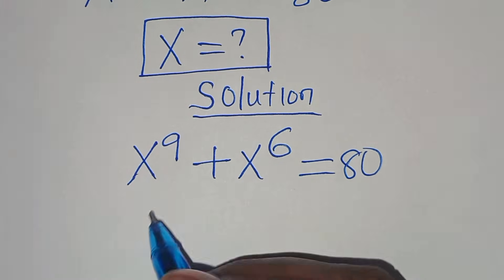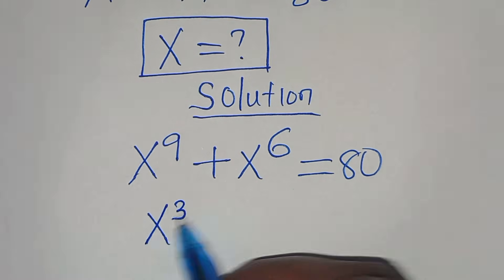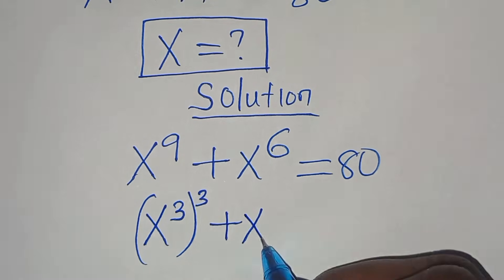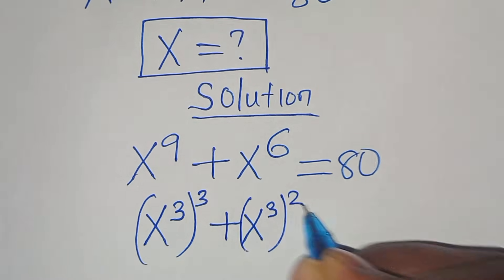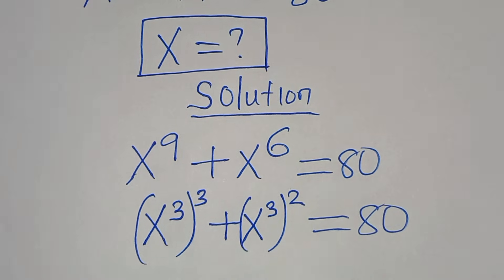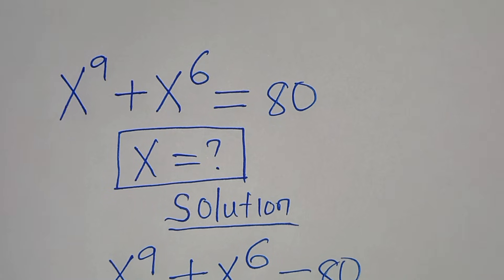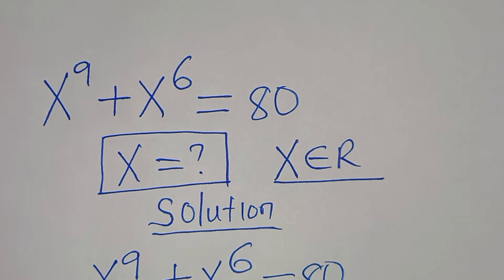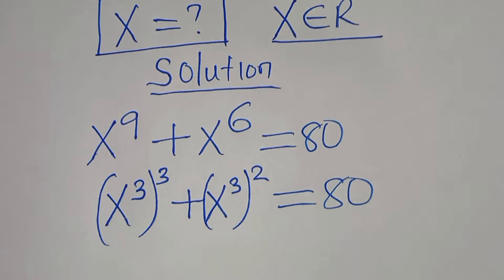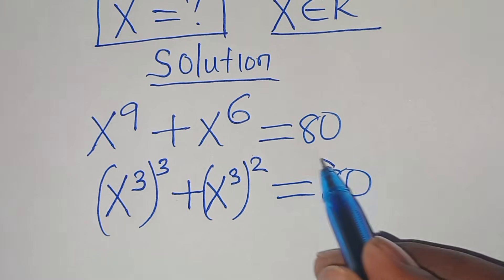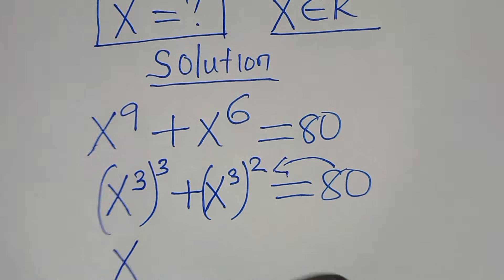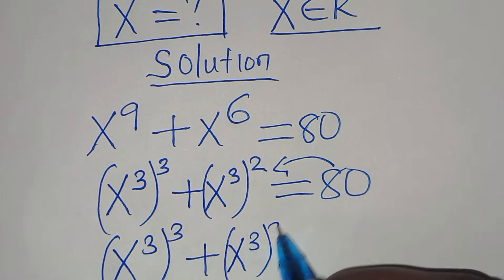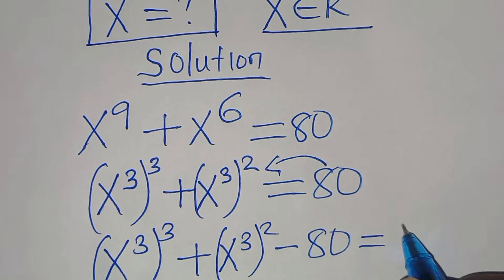We can express x to the power of 9 as x³ raised to the power of 3, and x to the power of 6 as x³ raised to the power of 2. This is equal to 80. Taking 80 to the left hand side, we have x³ raised to the power of 3 plus x³ raised to the power of 2 minus 80 equals 0.